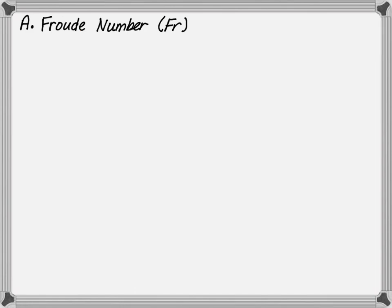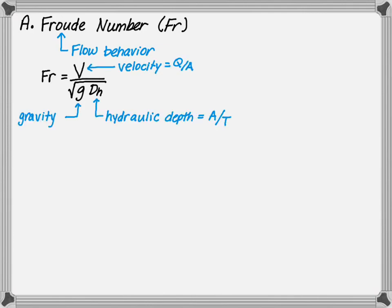The Froude number, Fr, is a dimensionless number used to describe the flow behavior. It is defined as the ratio of the flow inertia to gravitational forces. In open channel hydraulics, the Froude number is used to define the flow regime of an open channel. The Froude number is equal to the velocity divided by the square root of gravity times the hydraulic depth, where the hydraulic depth is the cross-sectional area divided by the top width.